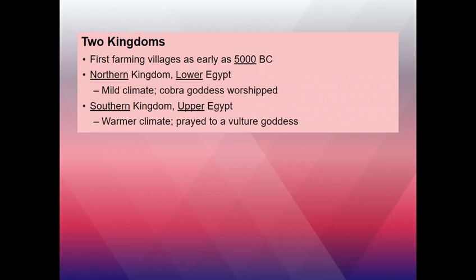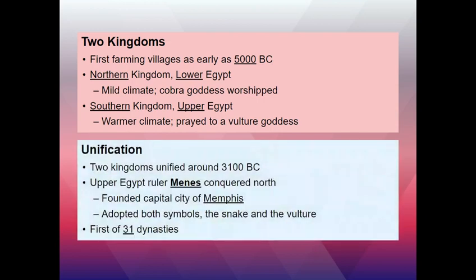Generally, how we talk about Egypt is by discussing different kingdoms. The Northern Kingdom is called Lower Egypt — it has a pretty mild climate and uses the cobra as its symbol. The Southern Kingdom is called Upper Egypt — it has a warmer climate and they use the vulture as their symbol. They are flip-flopped from what you would expect on a map, where the top is Lower Egypt and the south is Upper Egypt, just like the direction of the river itself.